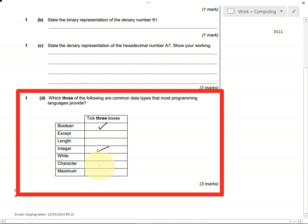Whereas character is a single letter or number, so we've got three data types here. And maximum - again, you might want to try and work it out when you're programming, but it's not a type of data.